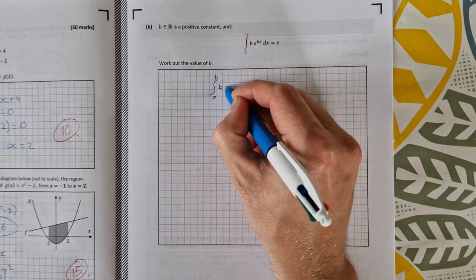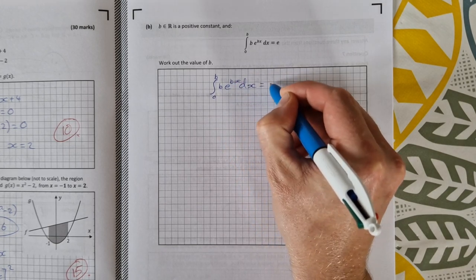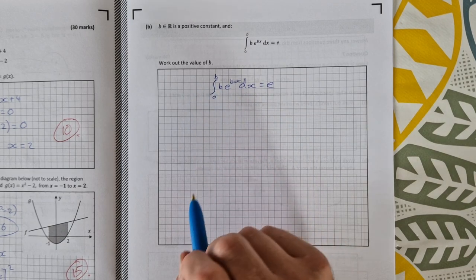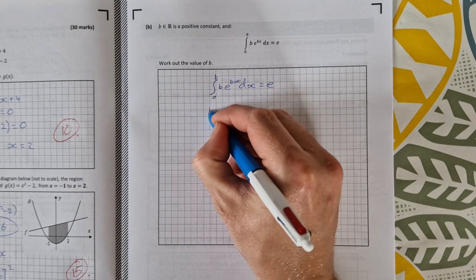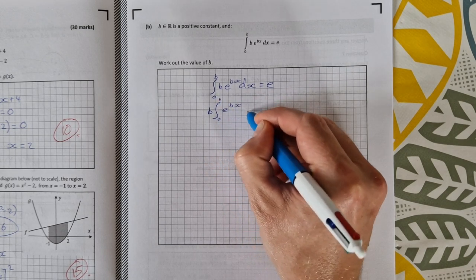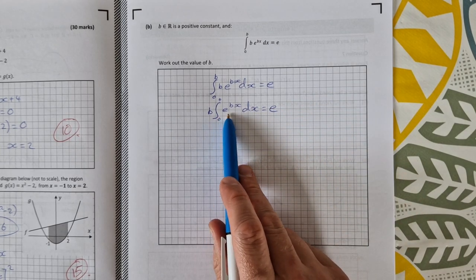The integral from 0 to b of b·e^(bx) dx = e. Well, first of all, this b is a constant so we can take it outside of the integral sign. So b times the integral from 0 to b of e^(bx) dx = e.